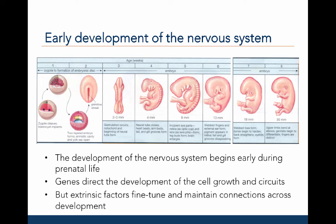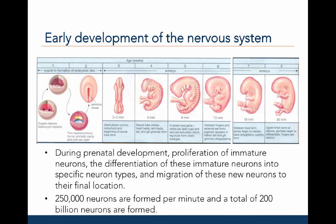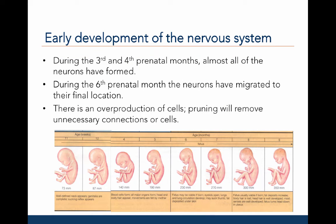Extrinsic factors are necessary to fine-tune and maintain important connections across development. During prenatal development, proliferation of immature neurons, differentiation of these immature neurons into specific neuron types, and migration of new neurons to their final location takes place. 25,000 neurons are formed per minute, and a total of 200 billion neurons are formed during prenatal development. During the third and fourth prenatal months, almost all neurons have been formed, and by the sixth prenatal month, neurons have migrated to their final location. During prenatal development there is an overproduction of cells, allowing the system to eventually prune away unnecessary connections later on.